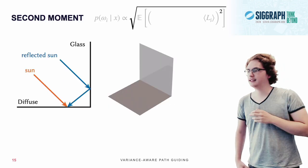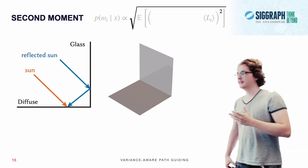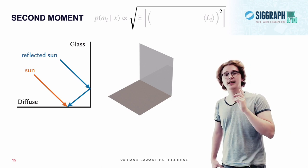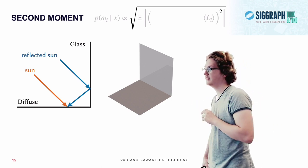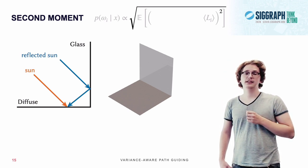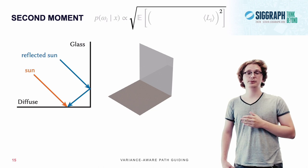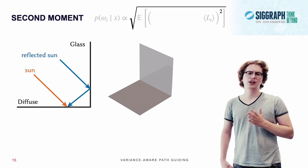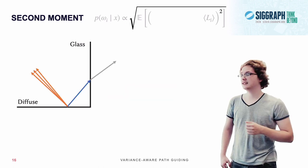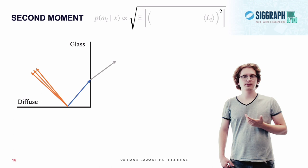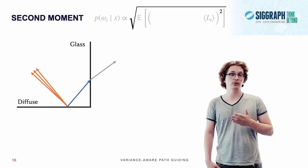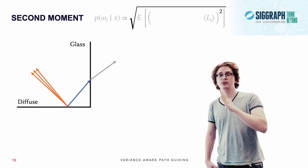Now consider the scene depicted here. We've got a diffuse floor, which is illuminated directly by sunlight as well as indirectly through the reflection of the sun in a glass pane. Now what ordinary guiding would do in the scene is, it would notice that the sun has a very high contribution and its reflection has a relatively low contribution, so it will send most samples directly towards the sun. However, this causes a problem, because the glass pane itself does a random decision as well on whether to refract the ray or whether to reflect it.